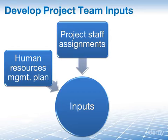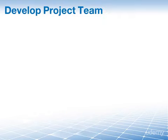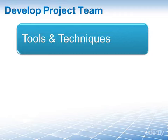Our second input is the Project Staff Assignments. You want to identify the people who are assigned to the project and know who they are — knowing the team is the first step to developing it. By knowing who they are and what their functions or assignments are, you can do an initial assessment to see what kind of team development is necessary. And then lastly, we have the Resource Calendars. The reason we have these as inputs is they contain resource availability. By looking at the calendars, you know when to schedule a team building event or a training session. Participation is key, and if your people aren't available, they can't participate.